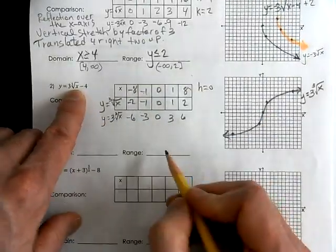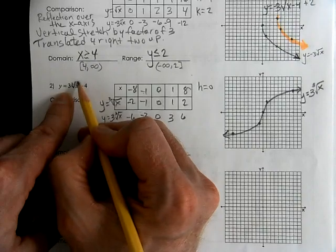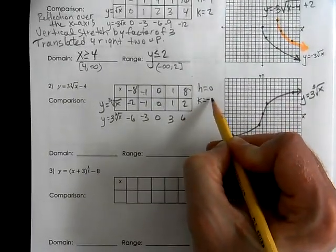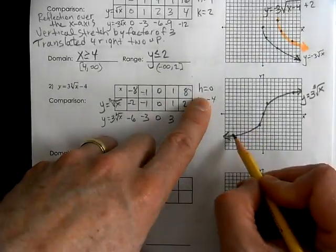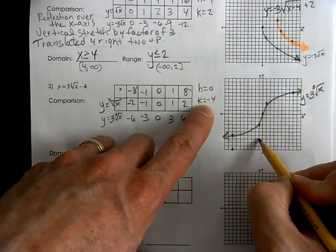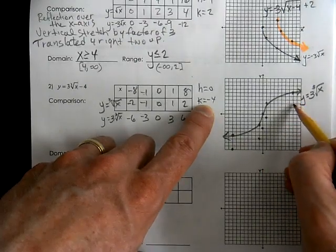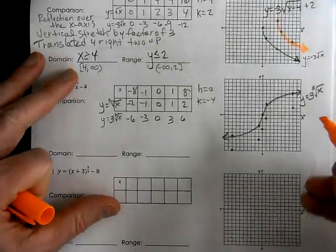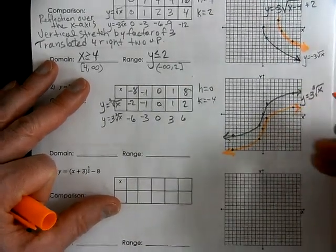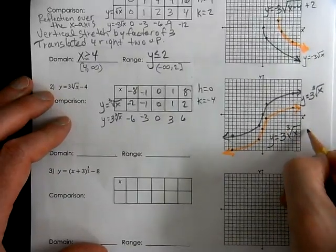I know my h value is going to be 0 because there's no other number inside the radical. Because the radical — the cube root — stops just above the x; it's not going over the 4. So I know this is a k value, and the k value is negative 4. So we're going to take all of these values to the right nothing, but down 4. Now we can graph that one, putting arrows on the ends. This is y equals 3 cube root of x minus 4.